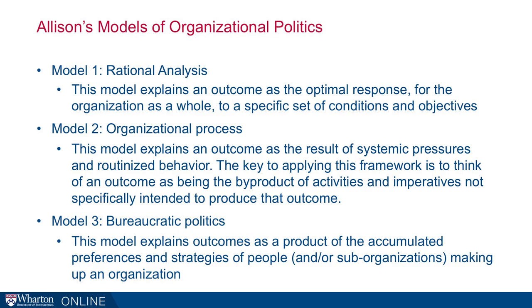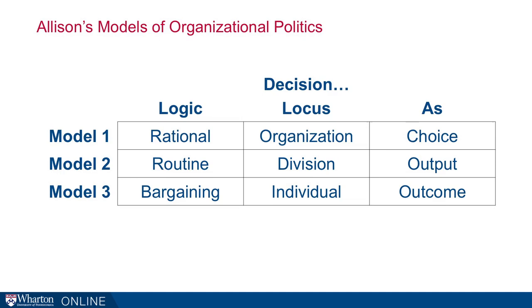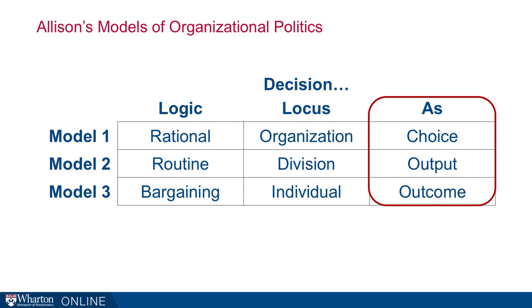Here's a quick summary. The logic of Model 1 is rational, Model 2 is routine, and Model 3 is bargaining. The locus varies: Model 1 focuses on the organization as a whole, Model 2 on the division or function, and Model 3 on the individual. What they manifest also differs: Model 1 manifests as a choice of the organization, Model 2 as an output or byproduct, and Model 3 as an outcome — all the individual bargains and negotiations bubble up to an outcome for the organization.